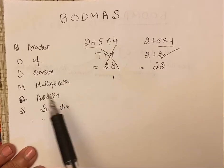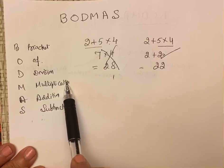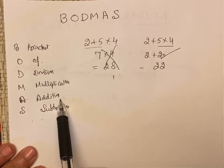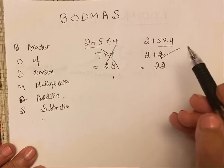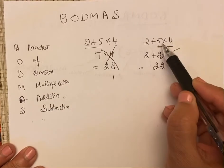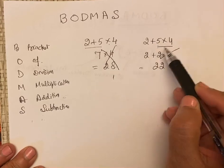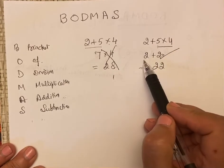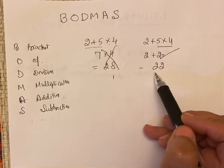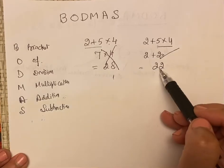So when we multiply these two, it becomes 20. 20 plus 2 is 22. So this is the correct answer.